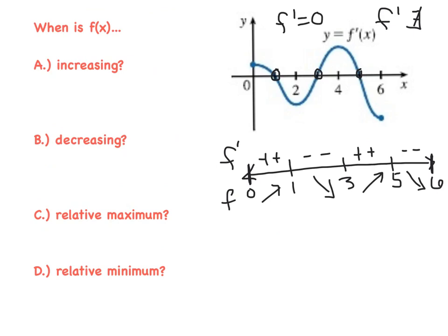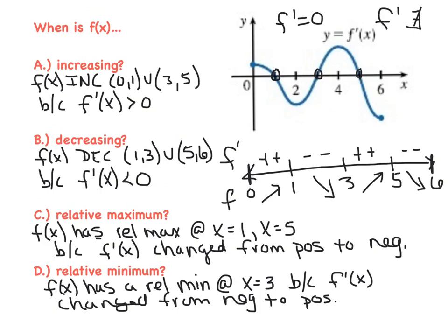Good time to practice the sentences on your own — hit pause and see if we wrote the same thing. f is increasing from 0 to 1 and 3 to 5 because f prime is greater than zero. f has relative max at x equals 1 and 5 because f prime changed from positive to negative, and so forth.